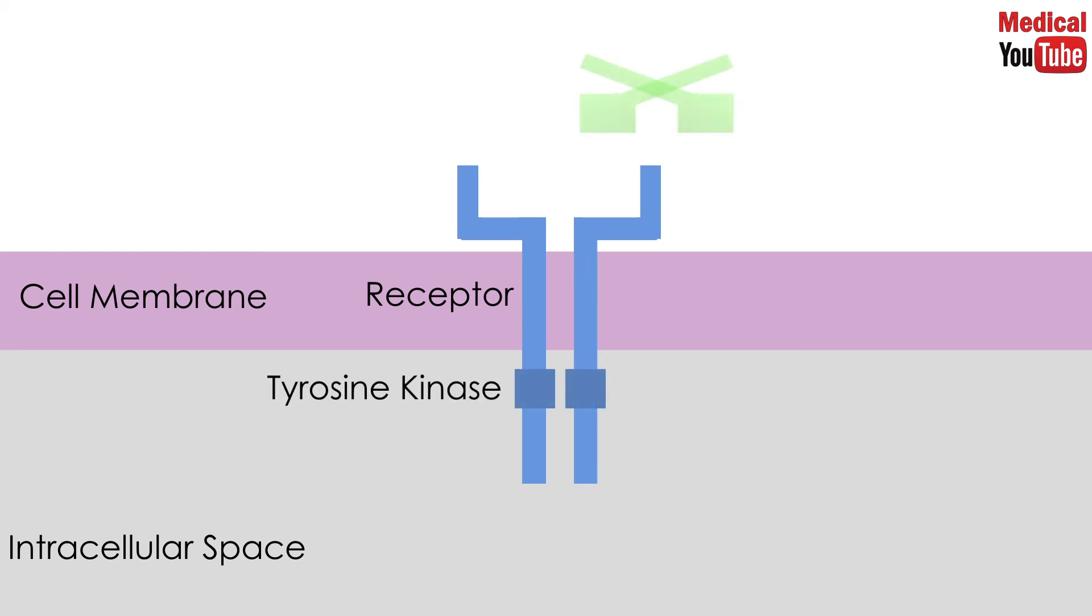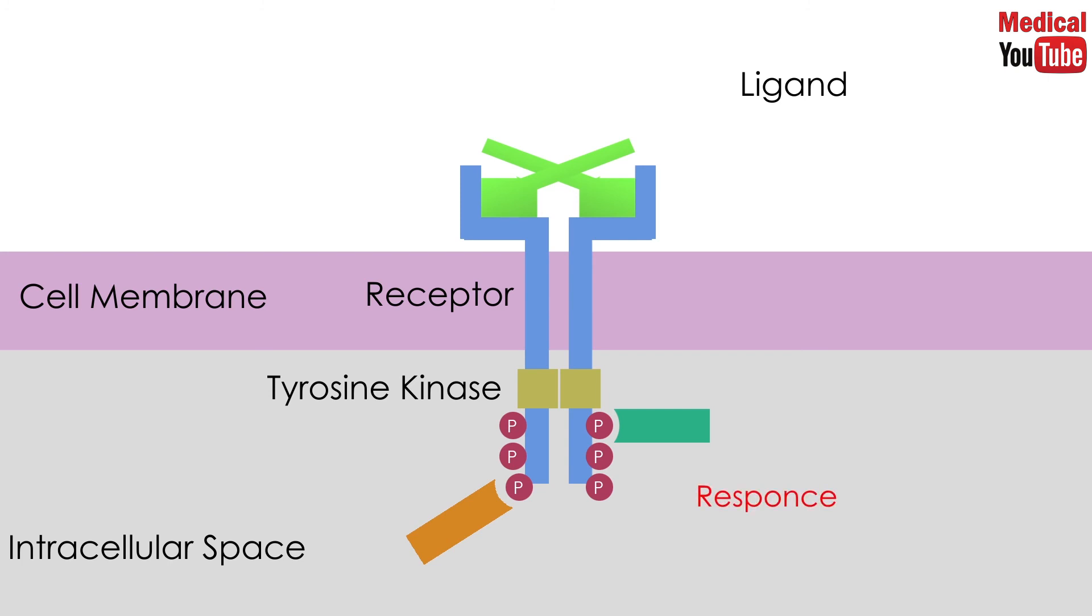Kinase-linked receptors contain an enzyme as part of their structure, mostly tyrosine kinase. When the ligand binds to the receptor, assembly of two receptors to form a dimer occurs, leading to activation of tyrosine kinase and phosphorylation of tyrosine residues in the receptor, allowing intracellular proteins to bind to it, and that initiates a series of events in the cell.